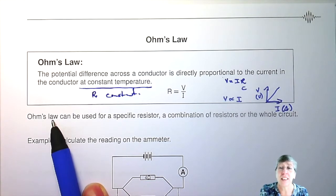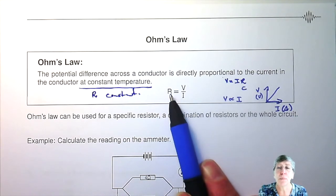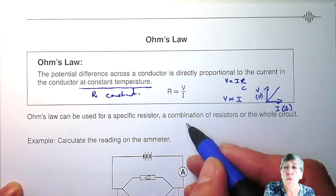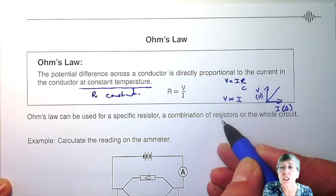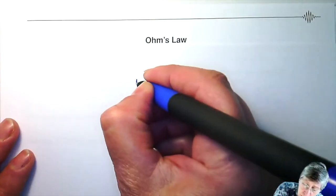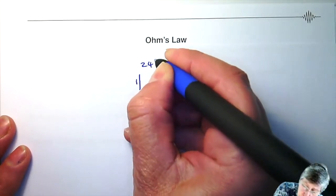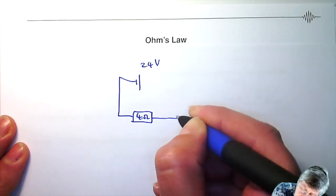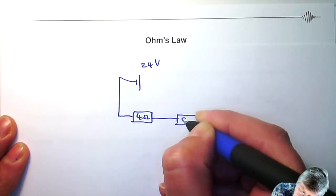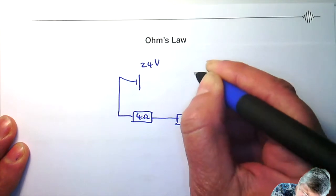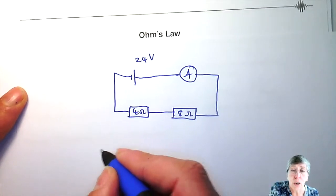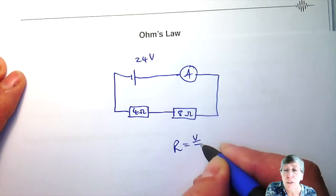So what's very important with Ohm's law is you have to know that you are putting in the correct variables. Those variables must be true either for a specific resistor, or for a combination of resistors, or for the whole circuit. Now I want to use Ohm's law — I want to use R equals V over I.